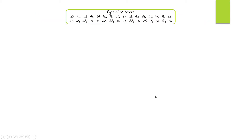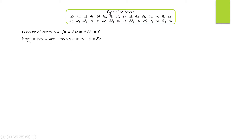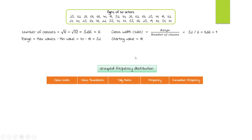Let's do one last example — ages of 32 actors. The minimum value is 18 and the maximum is 70. Number of classes: square root of 32 is 5.66, which we round up to 6. Range is 70 minus 18 equals 52. Class width is 52 divided by 6, which gives 8.6, rounded up to 9. The starting value is 18.